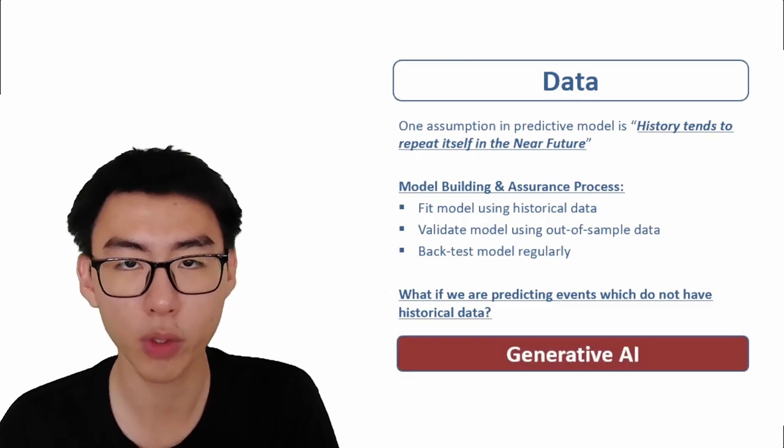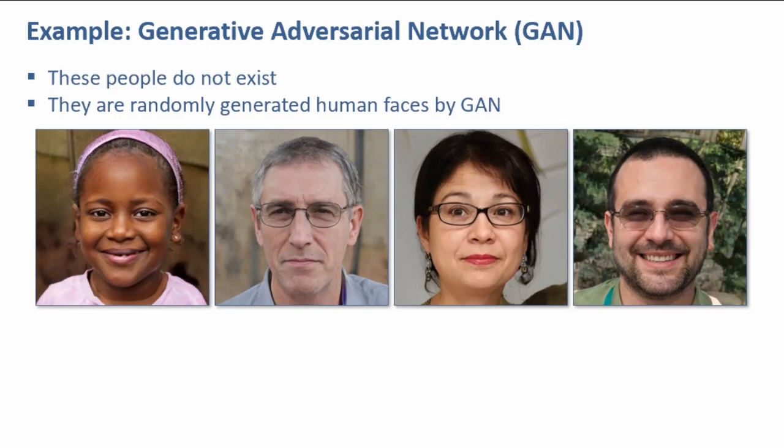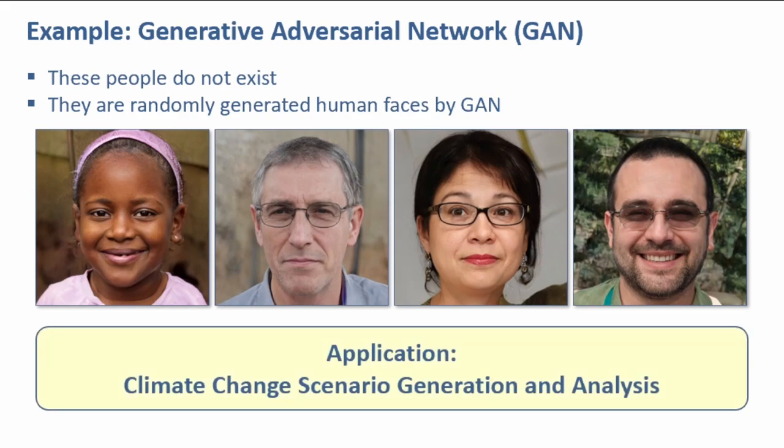In Industrial Revolution 4.0, Generative AI is the solution. Generative Adversarial Network, or GAN, is capable of generating random human faces. These people look real, but they actually do not exist. GAN can be applied in climate change scenario generation and analysis.